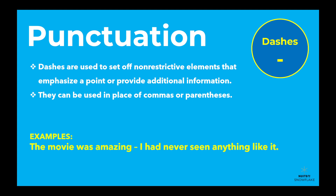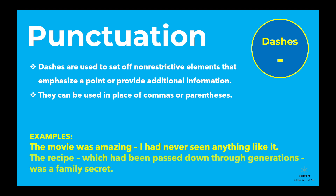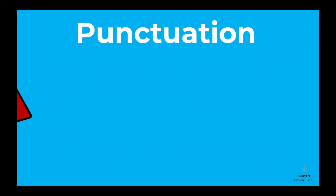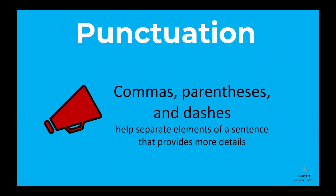For example: 'The movie was amazing — I had never seen anything like it.' 'The recipe — which had been passed down through generations — was a family secret.' Remember, when using punctuation like commas, parentheses, and dashes, they help separate elements of a sentence that provide more details.